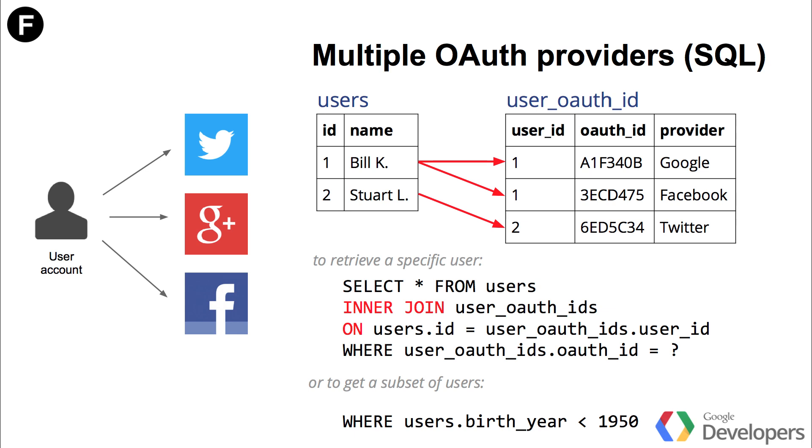We tried to represent this on the slide here. You need two tables — master-detail tables. You have a table with all your users and another one with all your OAuth IDs, and you relate one to the other. With NoSQL, it doesn't have to be that way. You have other options — multi-valued fields. With multi-valued fields, the same user can have multiple values for the same field, and you can handle that as if it was a single value. The same way you would have a user with a single OAuth ID, you can have multiple values, and you don't need a separate table for that.